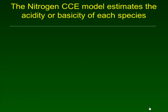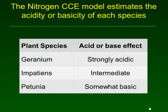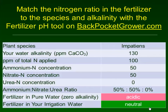The nitrogen CCE model takes this information about plant physiology and estimates how acidic or basic each of those three species groups are. Geraniums are strongly acidic, impatiens are somewhere in the middle, and petunias are somewhat basic. We can then enter this information into the fertilizer pH tool on backpocketgrower.com to see the net effect of species, alkalinity, and nitrogen form on pH.